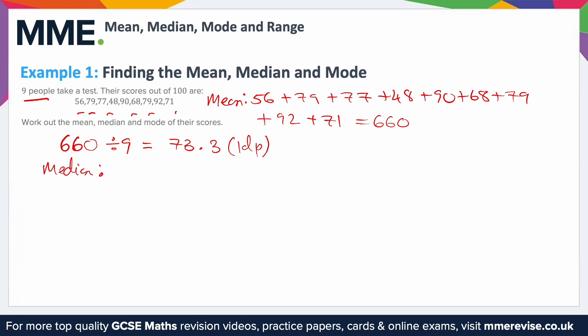For the median, first we need to put the values in order — either increasing or decreasing, it doesn't matter as long as they're in some sort of order. Doing that we end up with 48, 56, 68, 71 and so on.